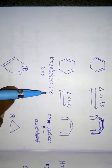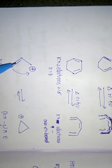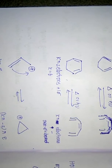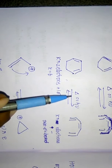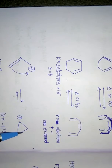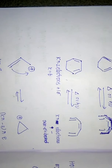Another example is the cyclopropenyl cation. The propenyl cation is a 4π system. On both thermal and photochemical conditions it undergoes cyclization to give the cyclopropenyl cation. Here one pi electron is removed and one additional sigma bond is formed. These are the examples of electrocyclic reactions.